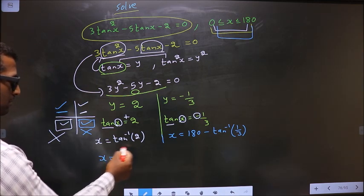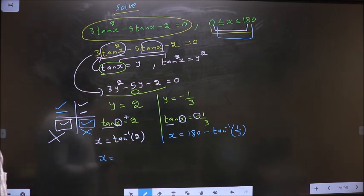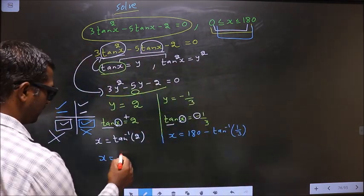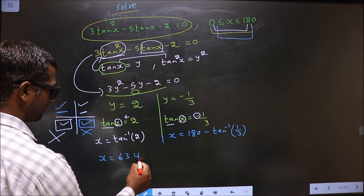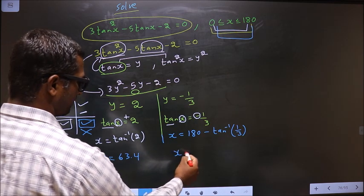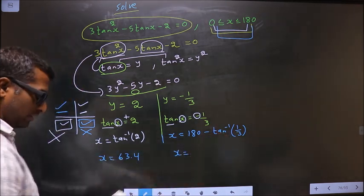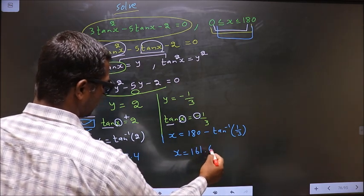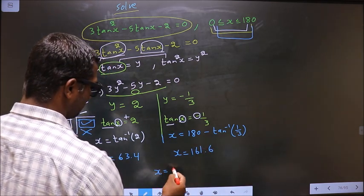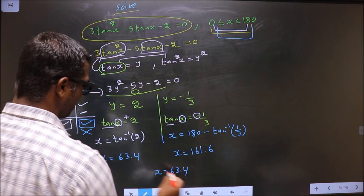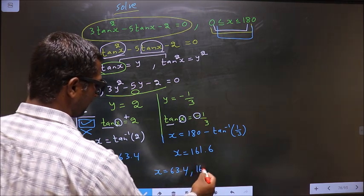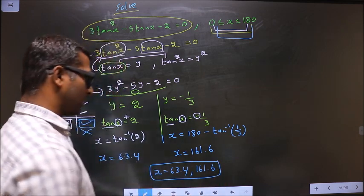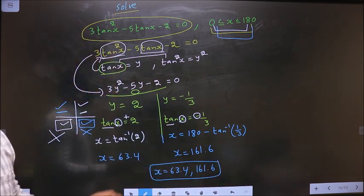x equal to, put this in the calculator, you should get 63.4. Here you calculate this, you get 161.6. So the x values we got are 63.4 and 161.6. This is our answer.